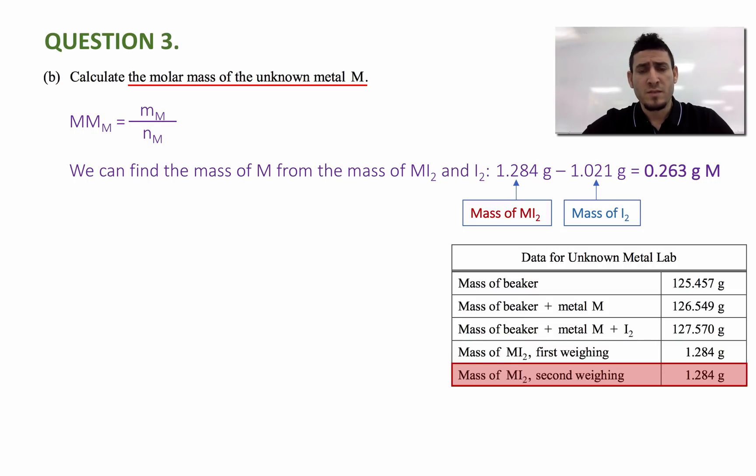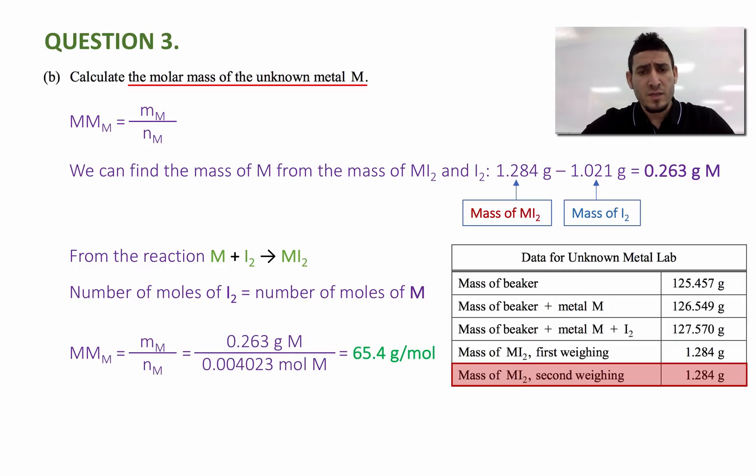And the number of mole that corresponds to this mass, I can find it from the equation. So looking at the equation M plus I2 gives MI2, I can simply say that the number of mole of metal M equals to the number of mole of iodine. Remember, we found the number of mole of iodine in part A. So I can use this number of mole and I get the molar mass of the metal M. The molar mass is equal to 0.263 grams of M divided by the number of mole, which is 0.004023 mole. And the answer is 65.4 grams per mole. Because the mass is in three significant figures, my answer is reported to three significant figures.